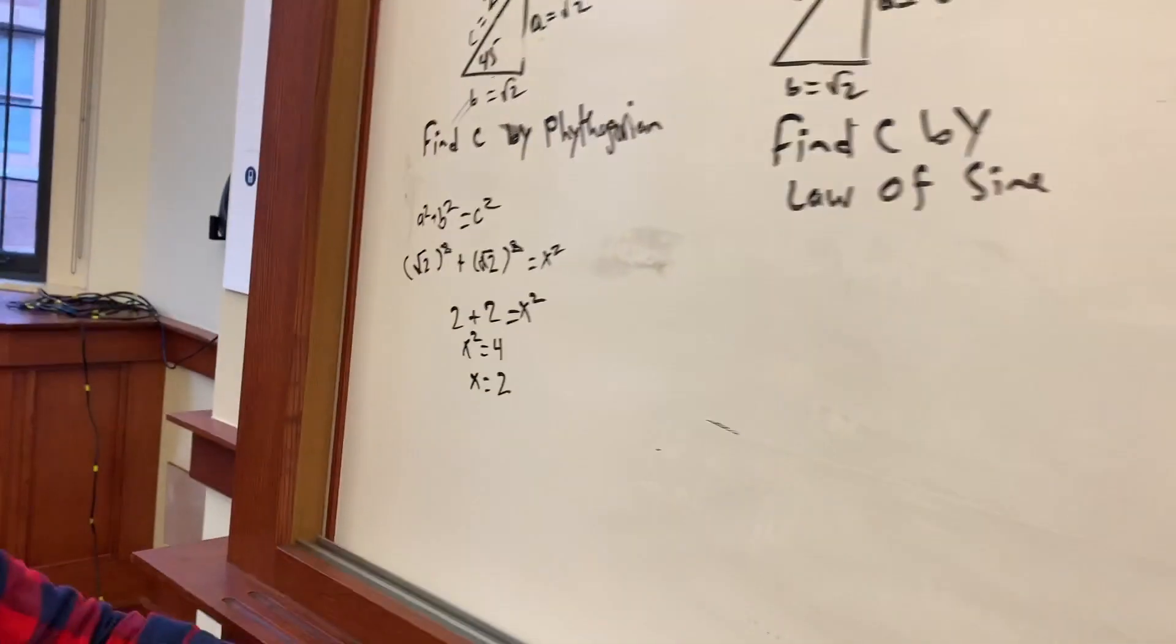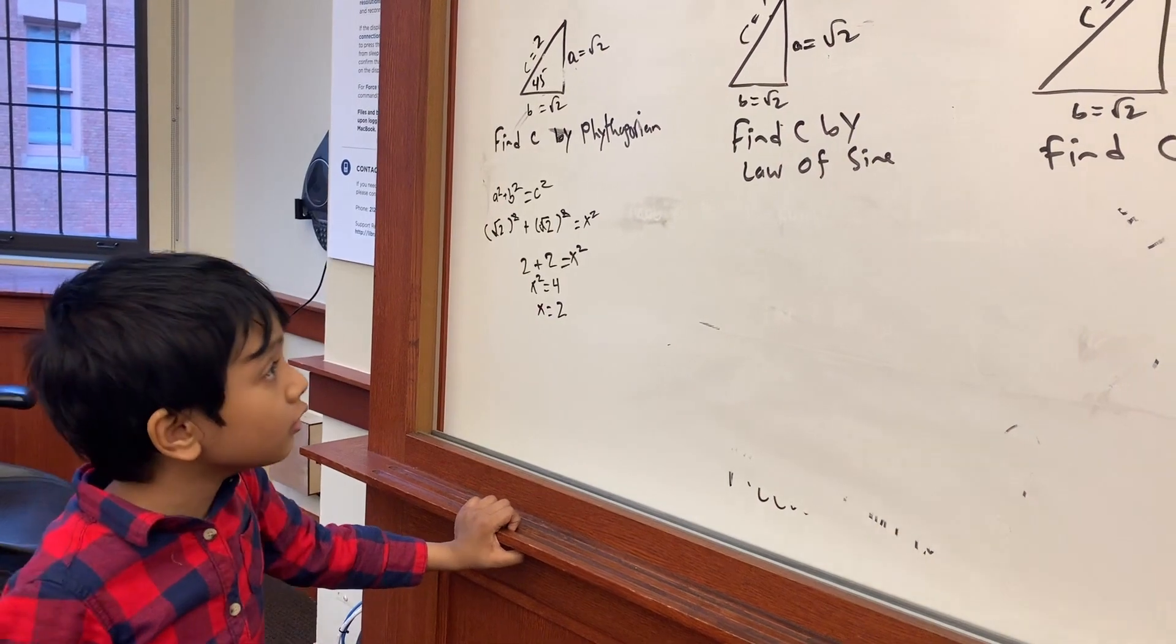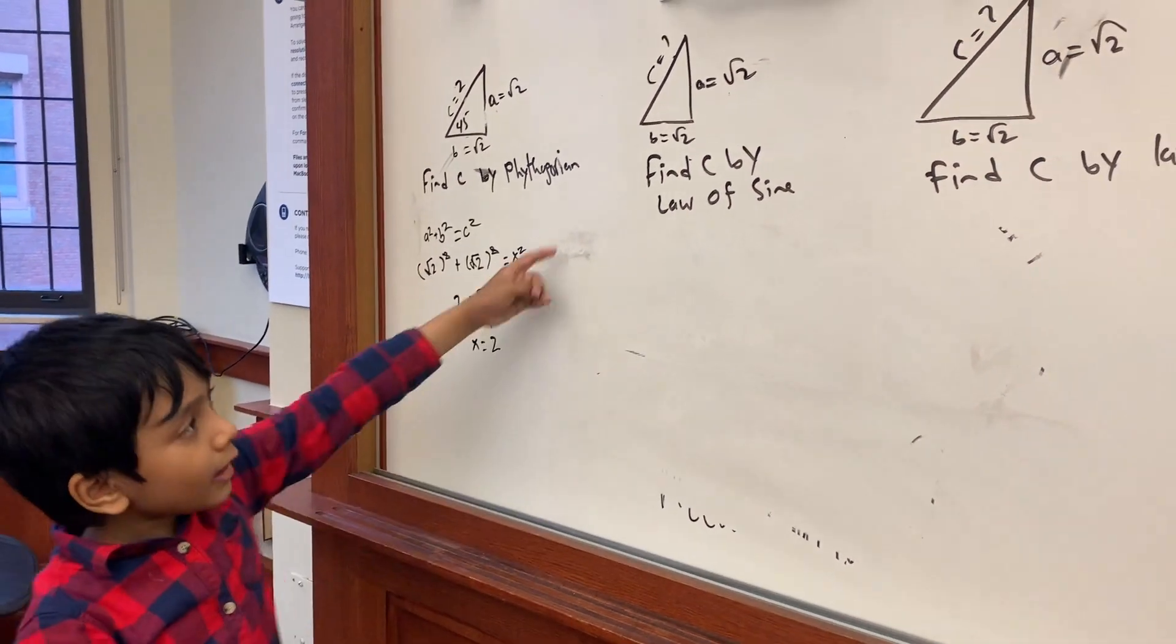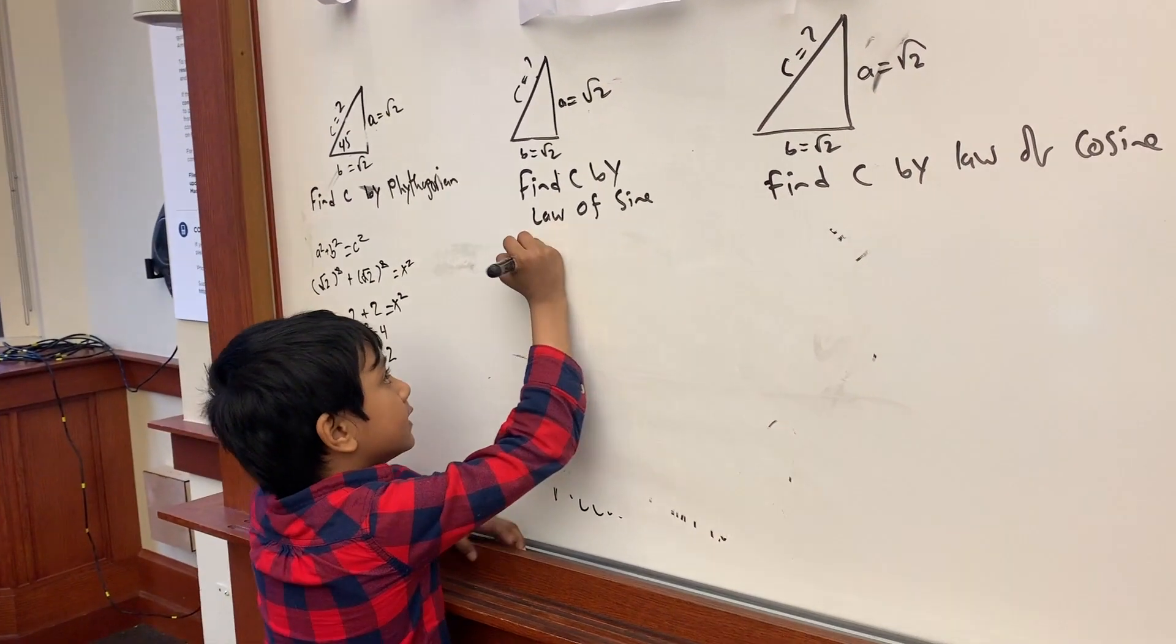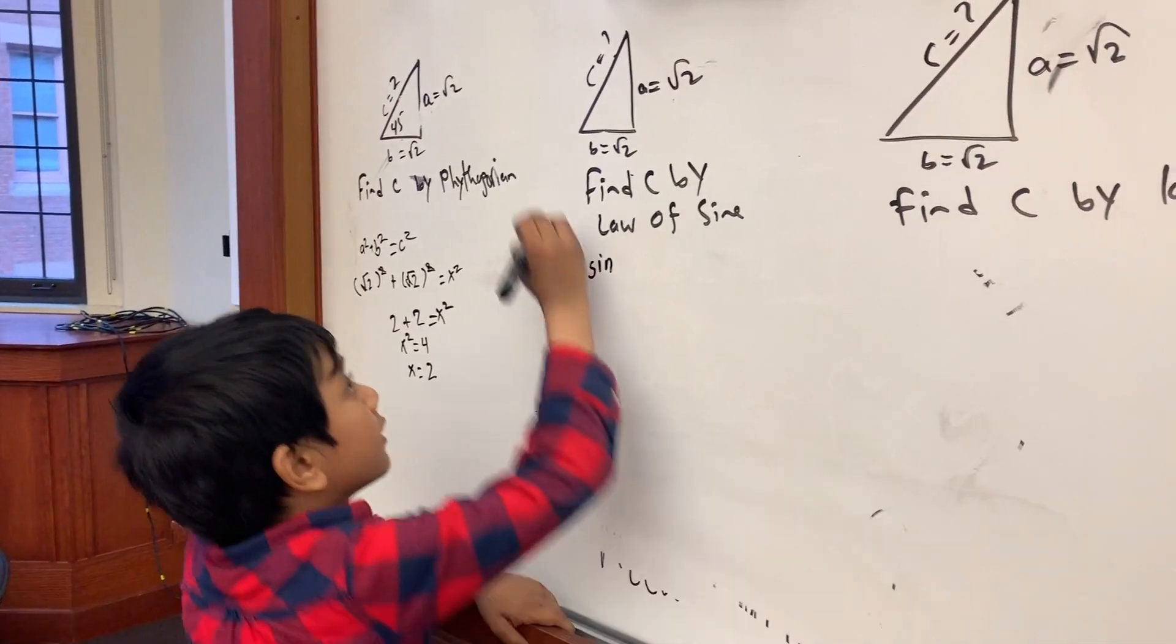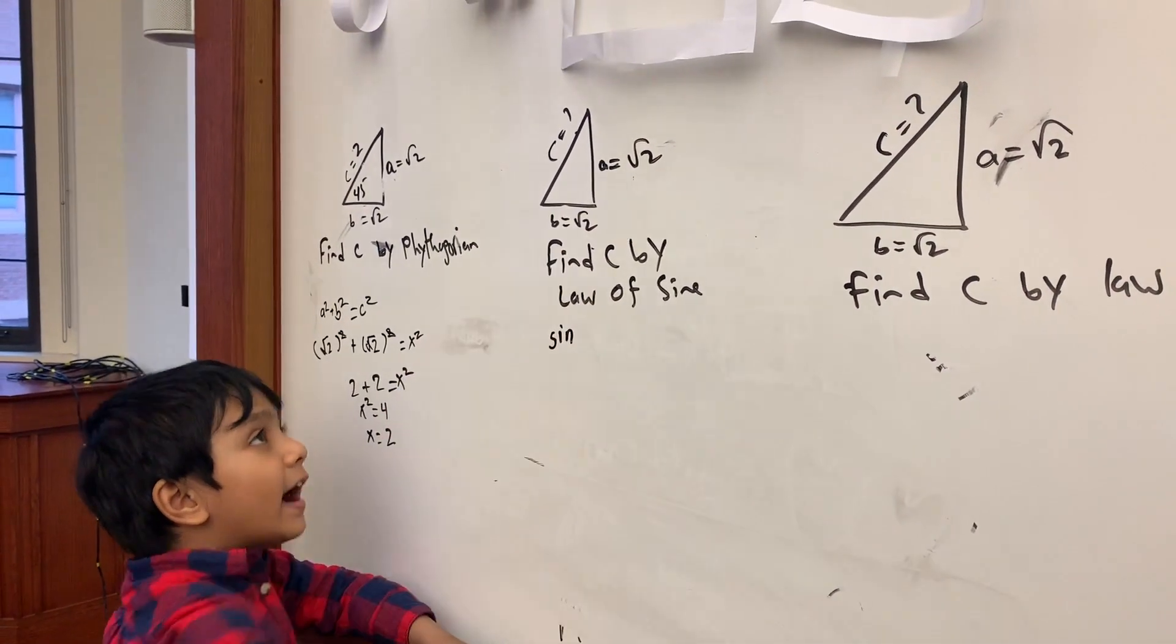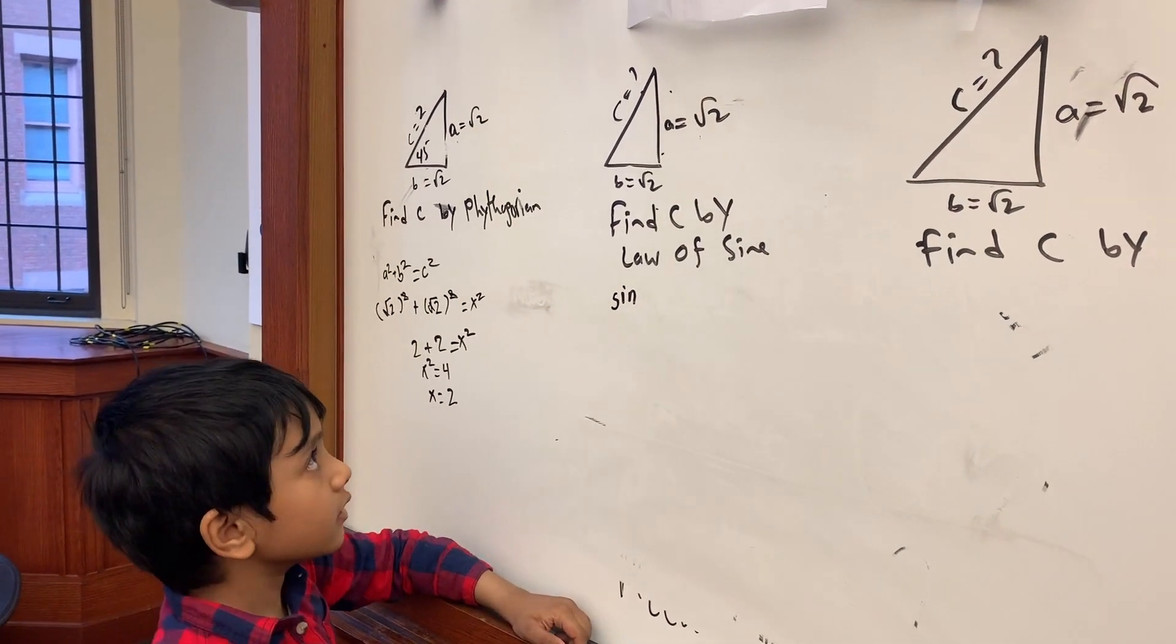Now we know that C is actually 2, but we have to solve the other problems too. So now we have to find C by the law of sine. Also, we need the angles for this one. So this is a 45 degree angle, this is a 90 degree angle, and this is also a 45 degree angle.